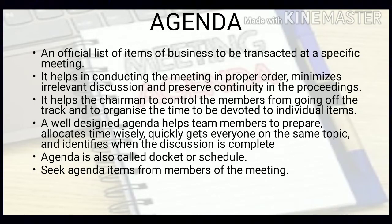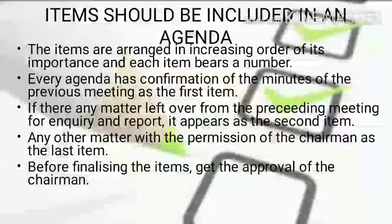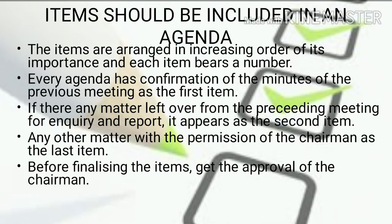Let's check what items should be included in an agenda. The items are arranged in increasing order of importance, and each item bears a number. Every agenda has confirmation of the minutes of the previous meeting as the first item. If there is any matter left over from the preceding meeting, or any enquiry and report, it appears as the second item.